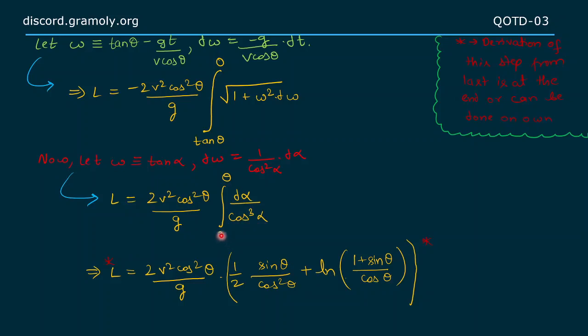This integration derivation is at the last of the solutions, so you can check it out in the description below or do it on your own. From here we get length of trajectory as 2v² cos² θ upon g times half of (sin θ upon cos² θ plus log of 1 plus sin θ upon cos θ).